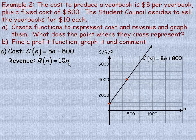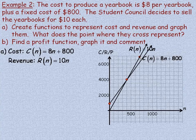The revenue function has no fixed amount, so we start at the origin. Plotting a point: if the number of yearbooks sold is 700, we go 700 times 10, which is 7,000. So the revenue for 700 yearbooks is 7,000. Drawing a line through those gives the revenue function. Notice the two functions intersect at the point (400, 4000). At N = 400, the revenue is 400 times 10, which is 4,000 — confirming they intersect there.